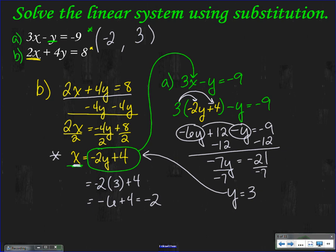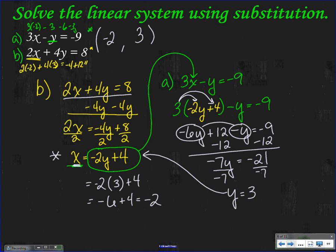Now for step three: take my answer and substitute it back into my equation. I've already got the equation solved for X, so I'll put Y equals 3 into X equals negative 2Y plus 4: X equals negative 2 times 3 plus 4, which is negative 6 plus 4, equals negative 2. Now let's check: 3 times negative 2 minus 3 should equal negative 9 — that's negative 6 minus 3 equals negative 9. It works. And 2 times negative 2 plus 4 times 3 equals 8 — that's negative 4 plus 12 equals 8. It works for both equations. So my answer is negative 2, 3. Not too bad — it's all math you already know how to do.